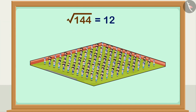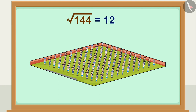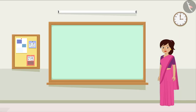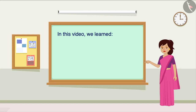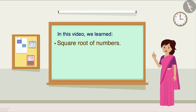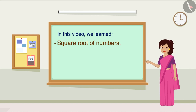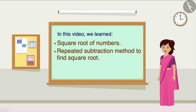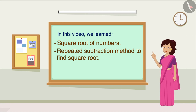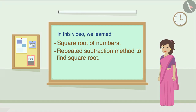So now the students will stand in 12 rows and each row will have 12 students. In this video we learned how to find the square root of numbers using the repeated subtraction method. In the next video we will see some examples related to it. Thank you!